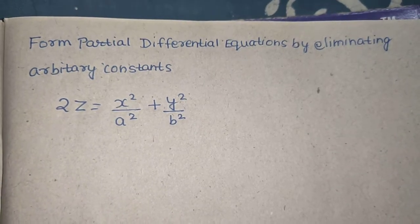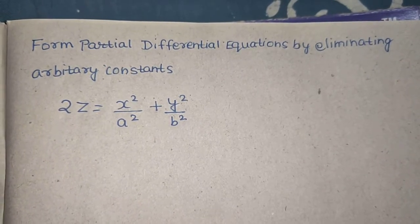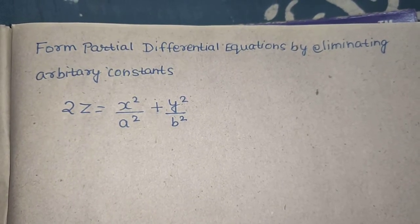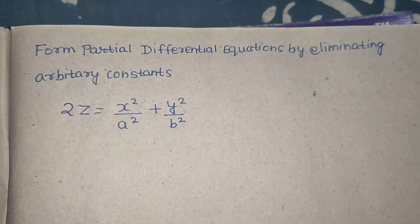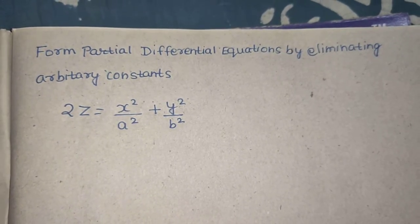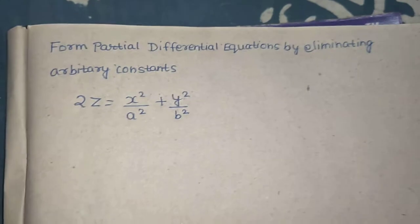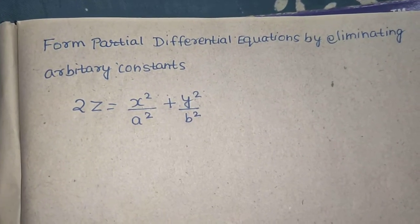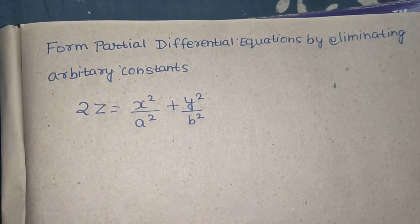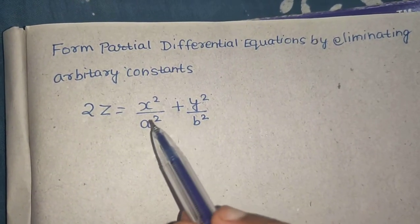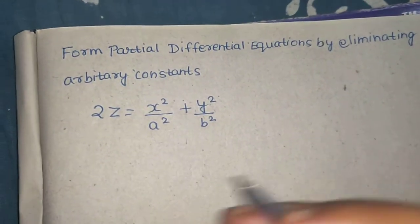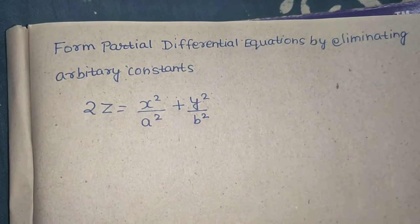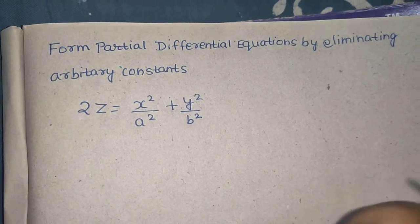Hello everyone, I hope everyone is in the best of health. In this problem we have to form a partial differential equation by eliminating arbitrary constants. As you can see, we have variables x, y, and z. We have to eliminate the arbitrary constants — a, b, or a-squared, b-squared — and form the partial differential equation.